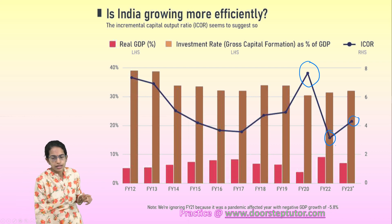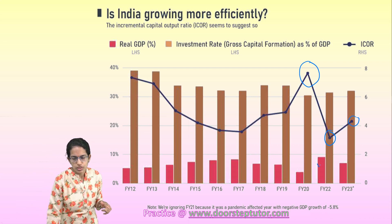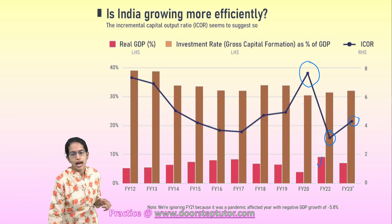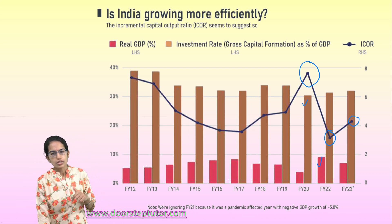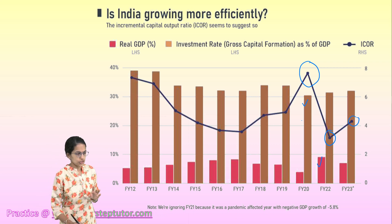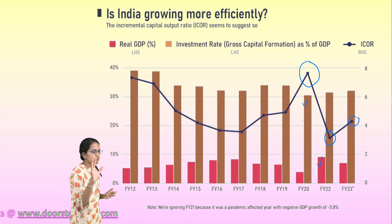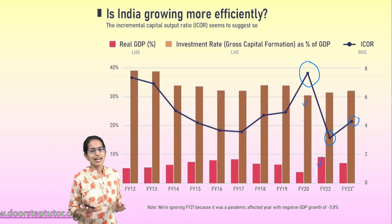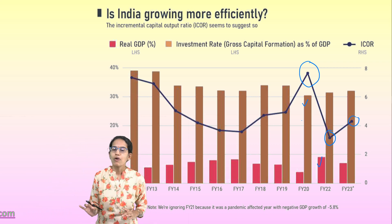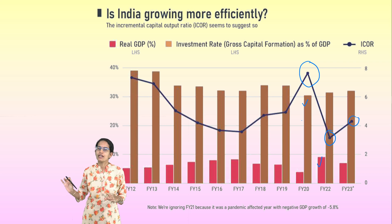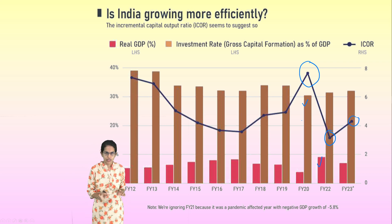The red line denotes the GDP and the brown line denotes the gross capital formation rate. Here we understand why ICOR is symbolic of the efficiency of the economy.